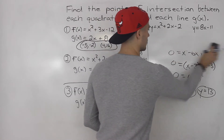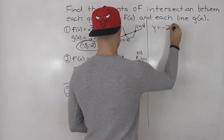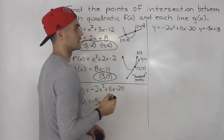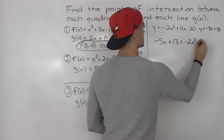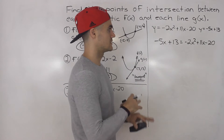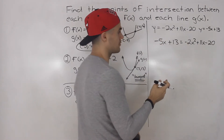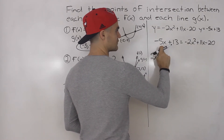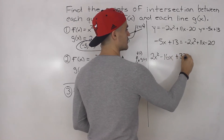Moving on to number three. The quadratic is y equals negative 2x squared plus 11x minus 20, and the line is y equals negative 5x plus 13. Make the y values equal: negative 5x plus 13 equals negative 2x squared plus 11x minus 20. Bring the right side over to the left. We get positive 2x squared, then negative 5x minus 11x gives negative 16x, and 13 plus 20 gives positive 33, all equal to zero.